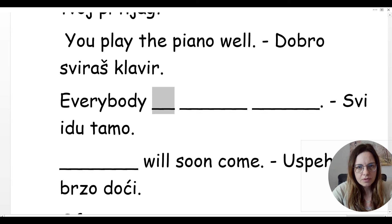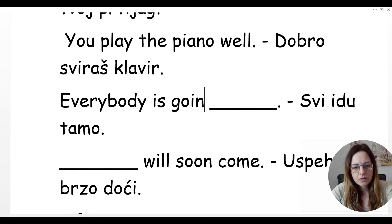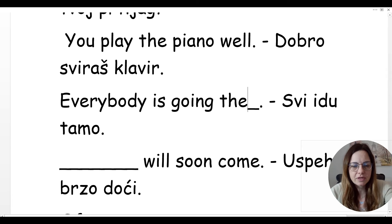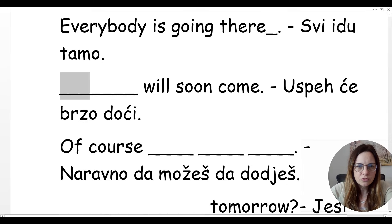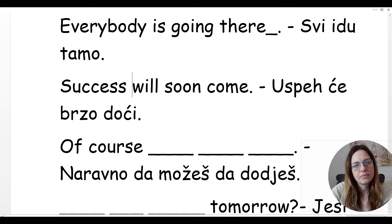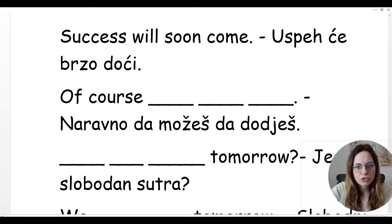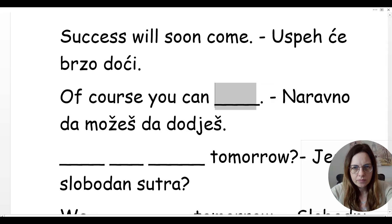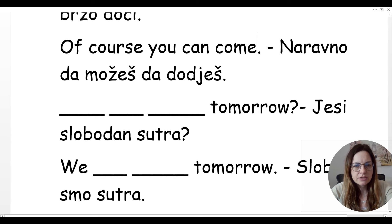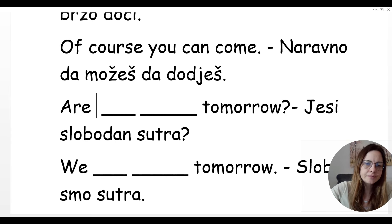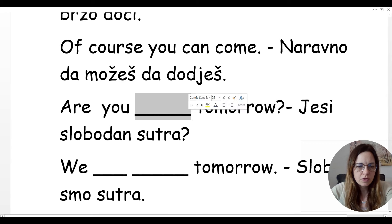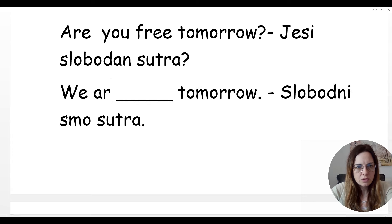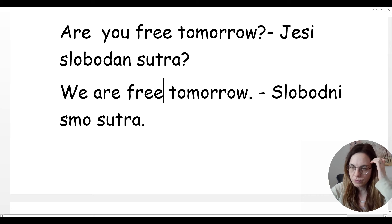Svi idu tamo — everybody, present continuous, is going there. Uspjeh će brzo doći — success will soon come. Naravno da možeš da dođeš — of course you can come. Jesi slobodan sutra? Are you free tomorrow? Mi smo slobodni sutra — we are free tomorrow.